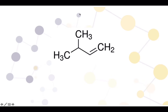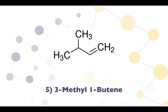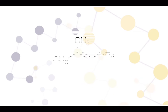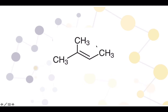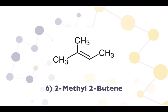Next, we can also put the methyl on the third carbon, so we name it 3-methyl-1-butene. Then we can also put the double bond between the second and third carbon, and we add a methyl group on the second carbon, giving us 2-methyl-2-butene.